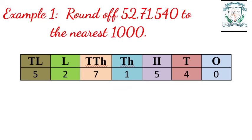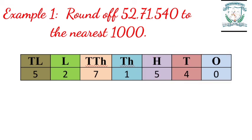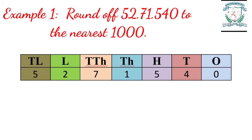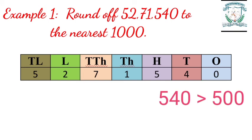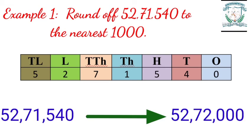Step three: check the digit in hundreds, tens and ones places. If it is five hundred or more than five hundred, then the digit in the thousands place is rounded to the next thousand and hundreds, tens and ones places will become zero. Here 540 is greater than five hundred, so those places become zero. Therefore, when we round off 52,71,540 to the nearest thousand, we get 52,72,000.